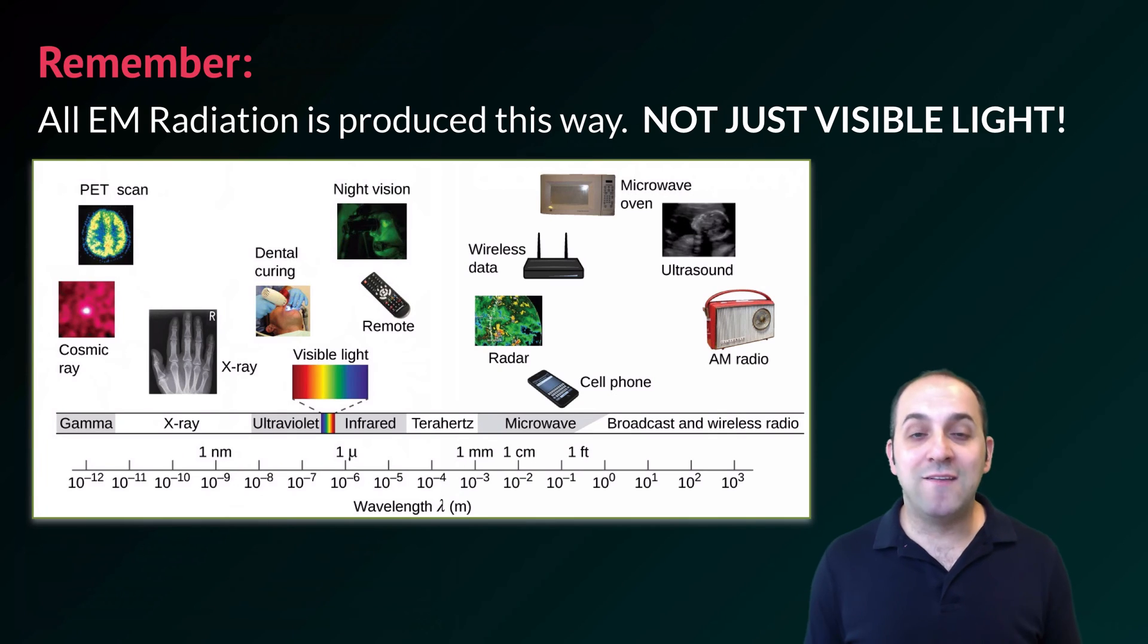So an important thing to remember is that all electromagnetic radiation is produced this way. It's not just visible light. The thing that makes visible light visible light is that those are the wavelengths that interact with the proteins in our eyes that sense colors outside of the visible wavelengths. We have no way of detecting them using our sensory apparatus, though we've certainly been able to build machines that can detect the other wavelengths of electromagnetic radiation as well.